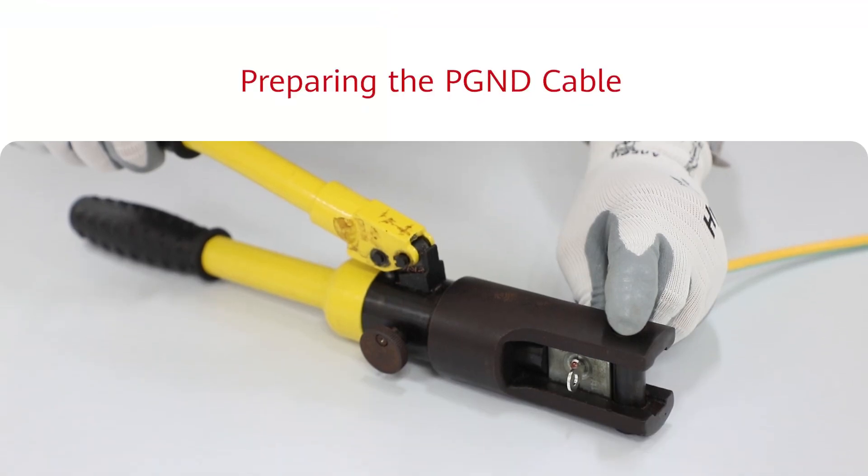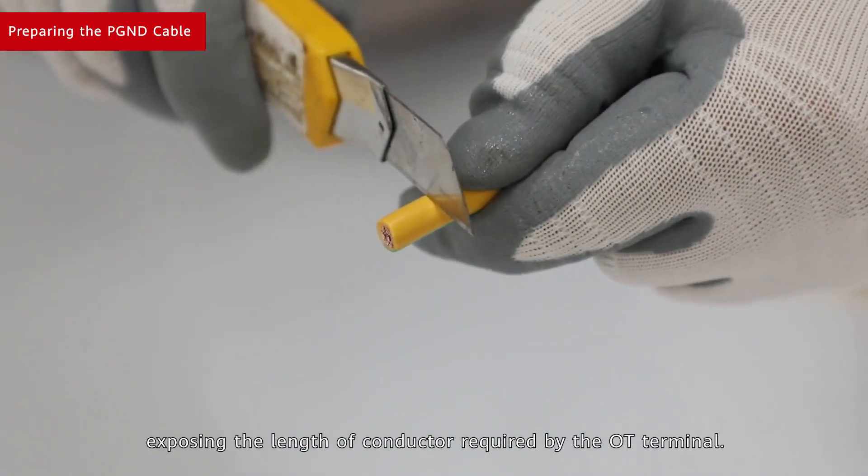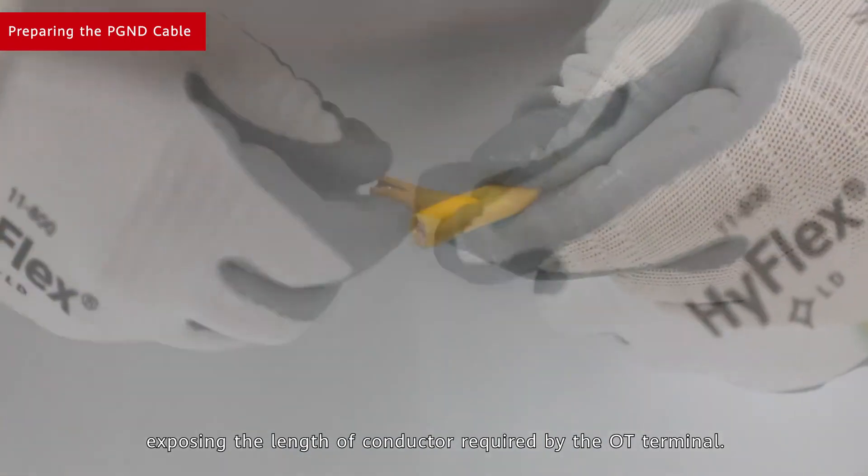Preparing the PGND cable. Strip the jacket off the PGND cable, exposing the length of conductor required by the OT terminal.